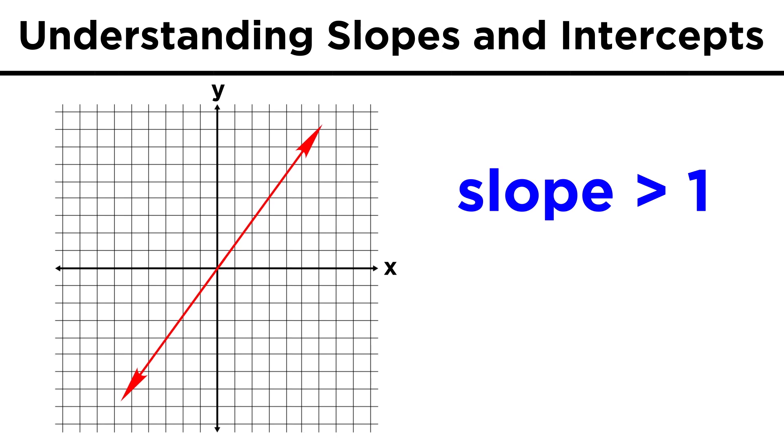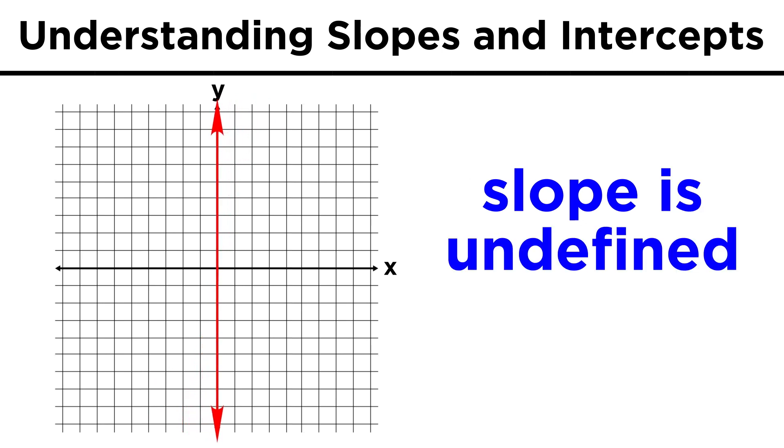If a line has a slope that is greater than one, it will tilt upwards like this, steeper and steeper, climbing towards infinity, until it reaches complete verticality, at which point the slope is undefined, because the line rises all the way to infinity in the y direction, without any run at all, and infinity over zero is undefined.